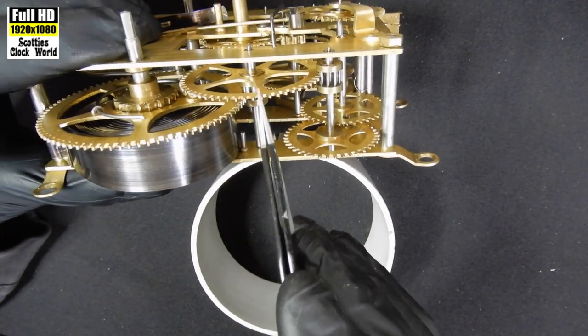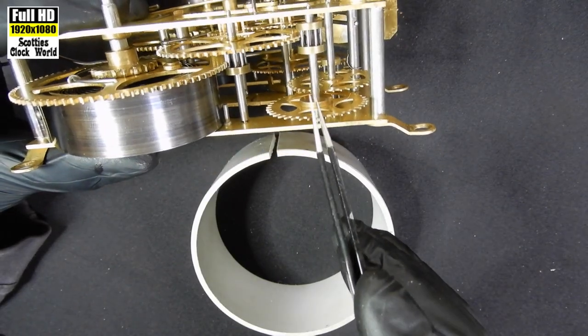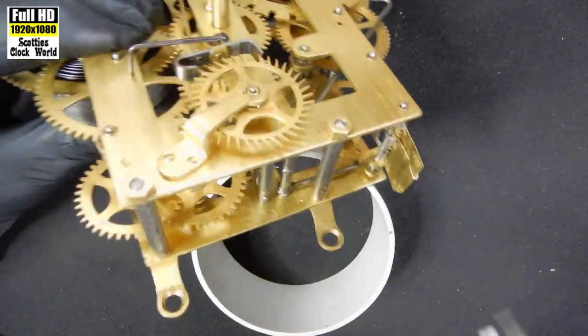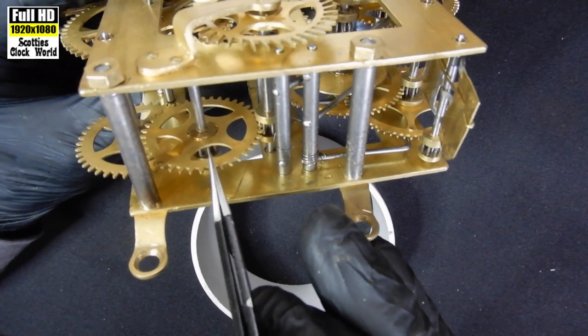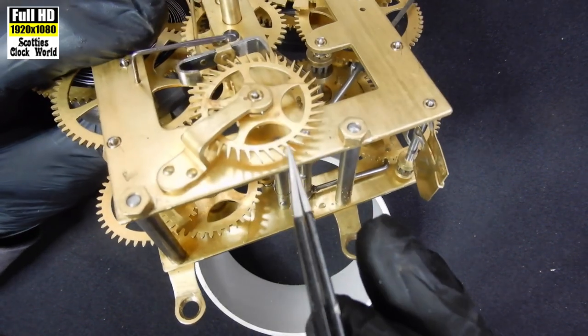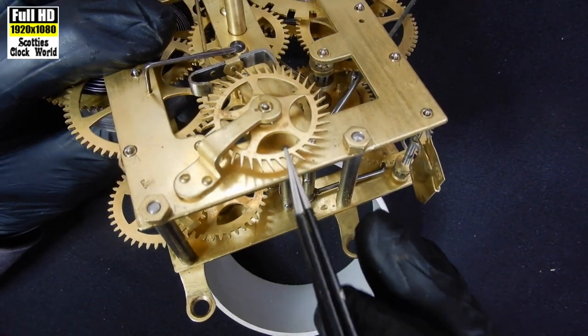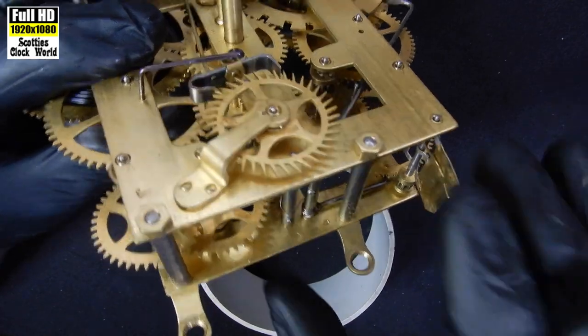That's the great wheel, first wheel, second wheel, the third wheel is there and that is the fourth wheel, also called the escape wheel.